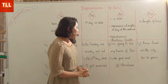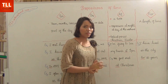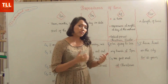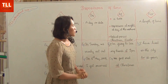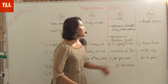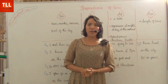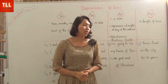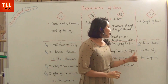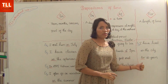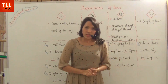The final preposition is 'for'. We use 'for' before a length of time. For instance: 'I have lived in the city for 10 years', or 'I have been learning English for 25 years'.